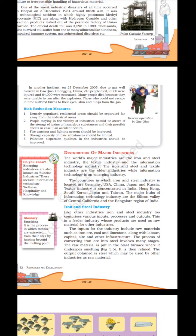Distribution of major industries: The world's major industries are the iron and steel industry, the textile industry and the information technology industry. Iron and steel and textile are older industries while information technology is an emerging industry. Countries where iron and steel industry is located include Germany, USA, China, Japan and Russia. The textile industry is concentrated in India, Hong Kong, South Korea, Japan and Taiwan. The major hubs of information technology are Silicon Valley in Central California and the Bangalore region of India.